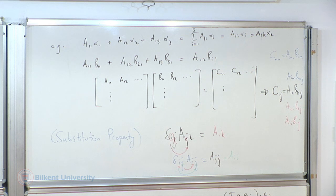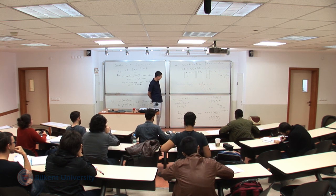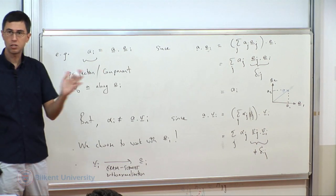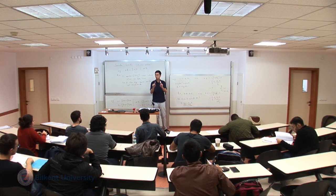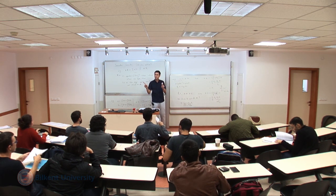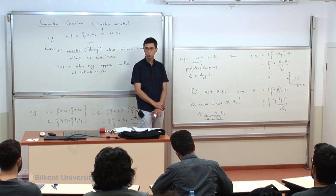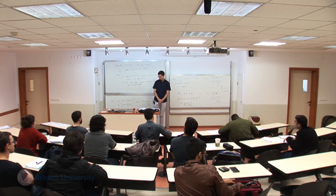We have only two minutes remaining, so I will stop here. Next time we will recall another operation having to do with vectors. In this lecture we worked with the dot product — the dot product of two vectors gives you a scalar. I will recall the cross product: you take two vectors and get a vector. To define that, I will introduce a symbol similar to the Kronecker delta that will be quite useful for several upcoming concepts. See you next time.